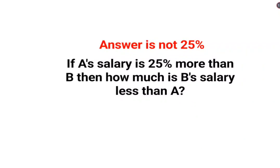Welcome everyone. A lot of people thought that the answer for this one is supposed to be 25%. Now let's quickly understand why they thought that. They're saying A's salary is 25% more than B, then B's salary will be how much less than A. It's very obvious, like a lot of people think that this has to be 25%. Now this is wrong.